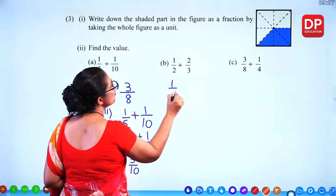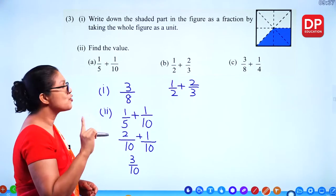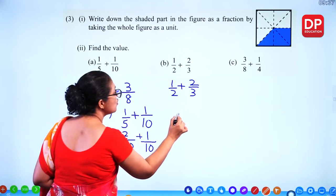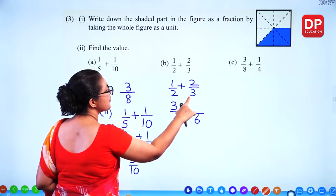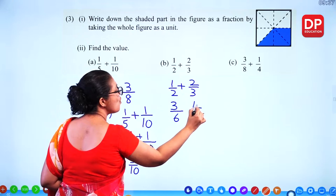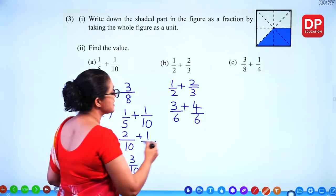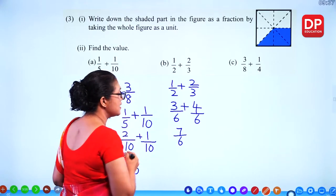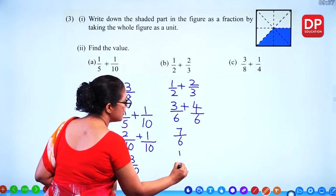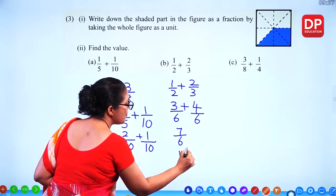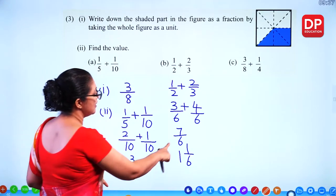For the next fraction addition with denominators 2 and 3, the lowest common multiple is 6. Convert both fractions to denominator 6: three times 1 = 3, and two times 2 = 4. Add numerators: 3 plus 4 = 7, giving 7/6. This is an improper fraction, so convert to a mixed number: 1 and 1/6.